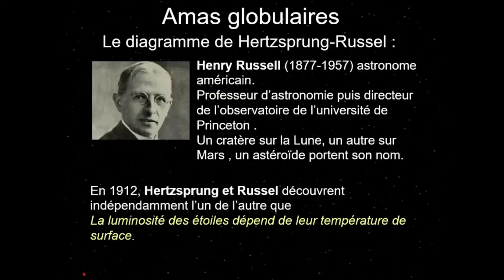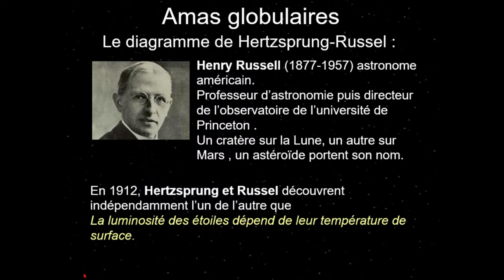L'autre compère, Henri Russell, astronome et directeur de l'observatoire de Princeton, a travaillé de façon indépendante. Tous deux ont vu qu'il y avait une relation intéressante entre la luminosité intrinsèque d'une étoile et sa couleur — sa température de surface, appelée classe spectrale. Ils ont eu l'idée de représenter chaque étoile par un point sur un diagramme avec en abscisse une grandeur relative à la température de surface et en ordonnée la luminosité intrinsèque — ce qu'on appelle en astronomie la magnitude absolue.